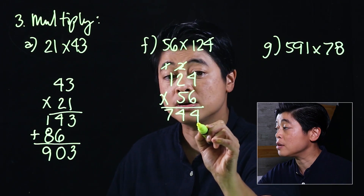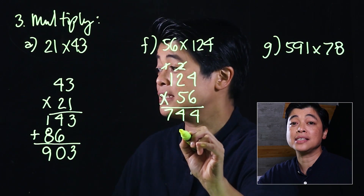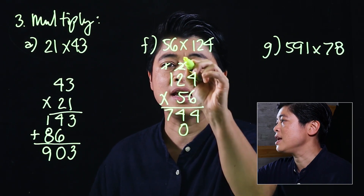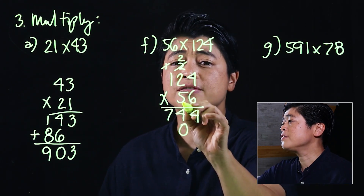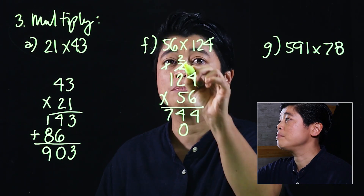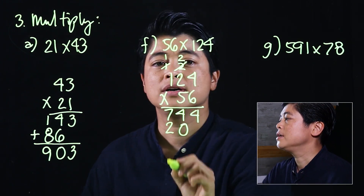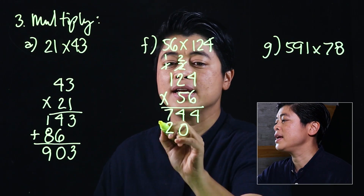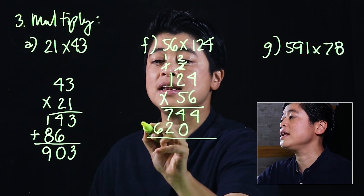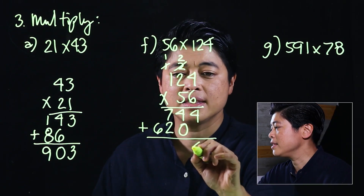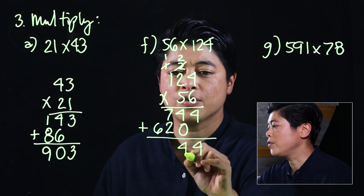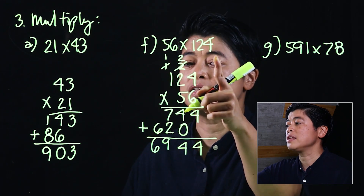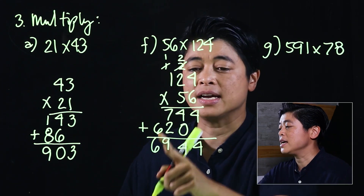Now we take the tens digit and multiply — it must start in the tens place, not under the four. Five times four is 20 — carry two; five times two is ten plus two is twelve; five times one is five plus one is six. Then we add: four, four, four, nine, and six. The product of 56 and 124 is six thousand nine hundred and forty-four.